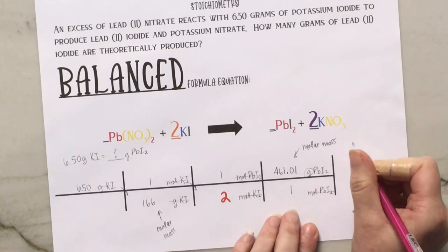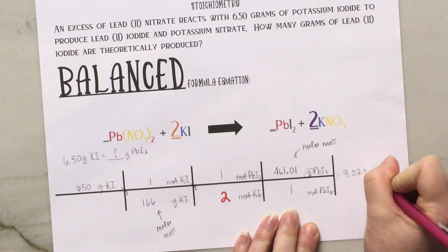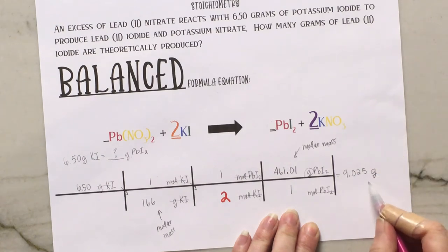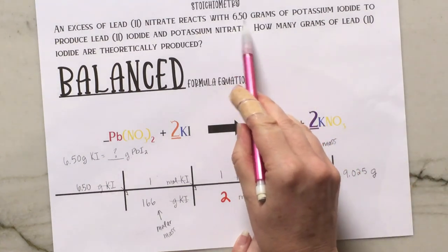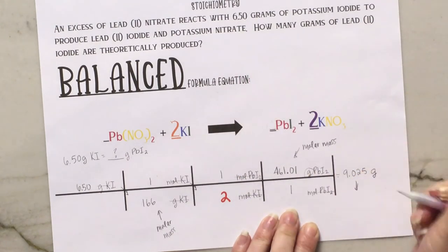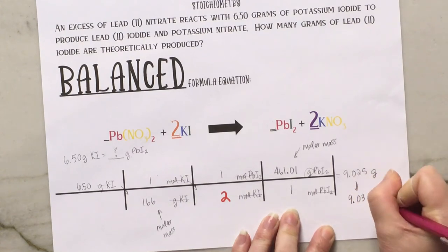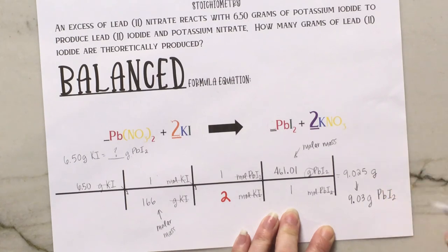You're going to get 9.025 grams. But we need to put this in significant figures. Go back to your original problem — your lowest number of significant figures is 3, because that zero in 6.50 is significant since it's after a decimal. So the final answer is 9.03 grams of lead 2 iodide.